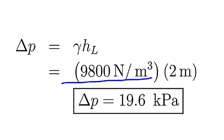Putting numbers in, the specific weight is 9,800 newtons per cubic meter. The head loss is two meters, so the pressure drop is 19.6 kPa.